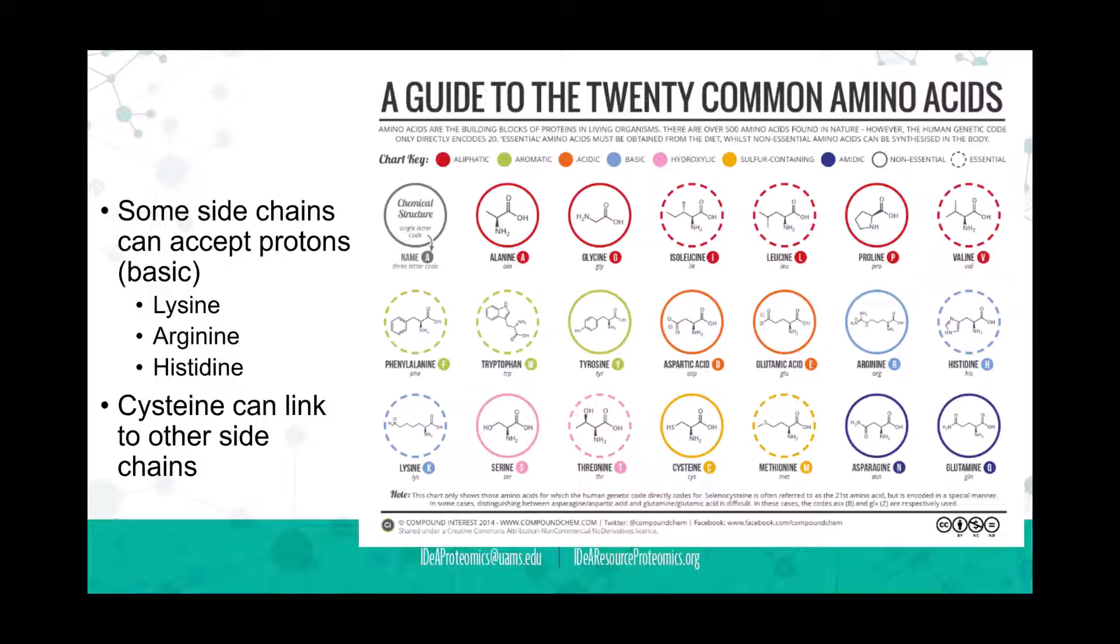The ones we're interested in for mass spectrometry are the side chains of amino acids that can accept protons, called basic amino acids—lysine, arginine, and histidine.